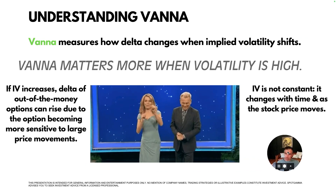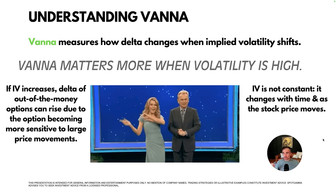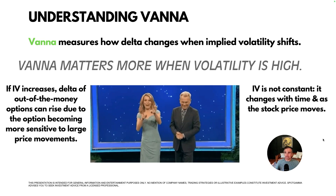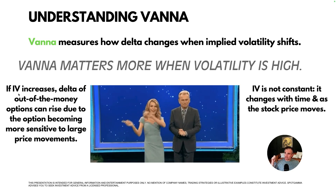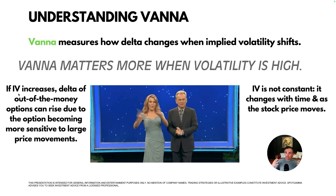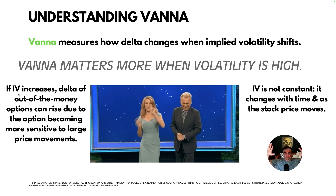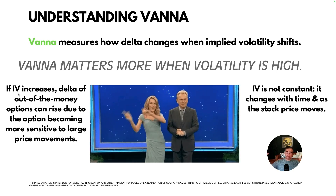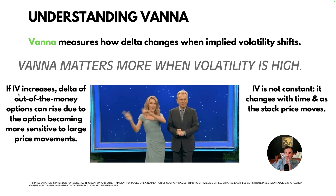Now let's talk about Vanna. Vanna measures how Delta changes with implied volatility. One of the big things to note is that Vanna matters more when implied volatility is high — think of a stock just before earnings or the VIX at 50. If implied volatility increases, the Delta of out-of-the-money options can rise, because implied volatility is an estimation of how much traders think the underlying stock is going to move. With 100% implied volatility, your options have more odds of going in the money. A highly volatile stock has a much higher chance of moving up 10–20% to an out-of-the-money strike compared to a low-vol name like Coca-Cola.